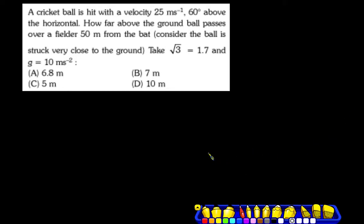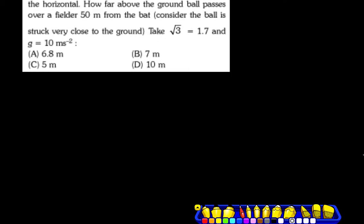A cricket ball is hit with velocity 25 meters per second at an angle of 60 degrees from the horizontal. The velocity is 25 meters per second and the angle from horizontal is 60 degrees.